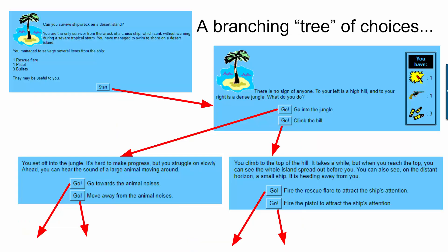So if you're not sure what these are, it is a branching tree of choices that you offer the user. These slides come from a text game called Castaway which you can look up if you do a Google search for Castaway choose your own adventure. You can see here in the upper left can you survive the shipwreck on a desert island and then there's some text and you click start.